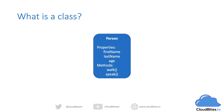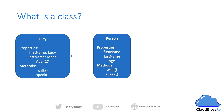So let's look at an example in a diagram here. You might have the Person class that has some properties or member variables, which will be first name, last name, and age, and then we have some methods which are walk and speak. In a future video I'll talk through the exact difference between properties and member variables, but for this simple starting example let's just think of them as the same thing. We then have an instance created of this class such as Lucy, who has Lucy as the first name, Jones as the last name, and 27 as the age, and has the walk and speak methods.